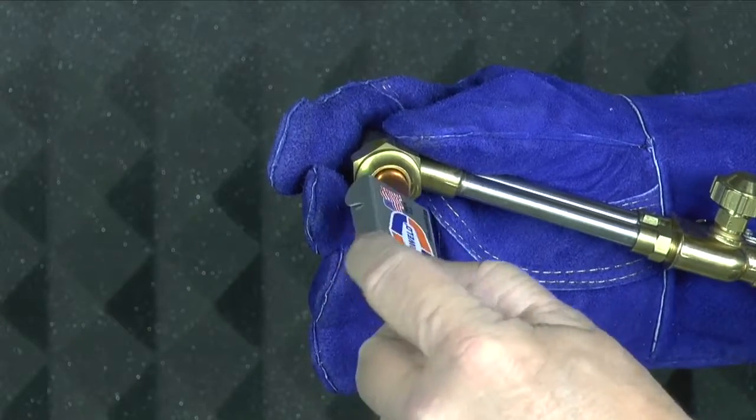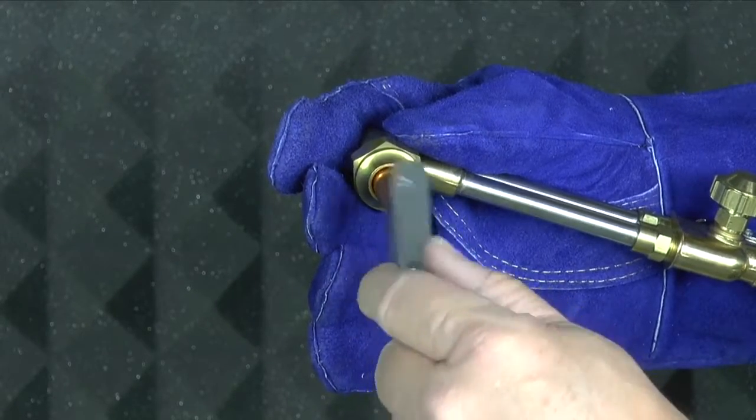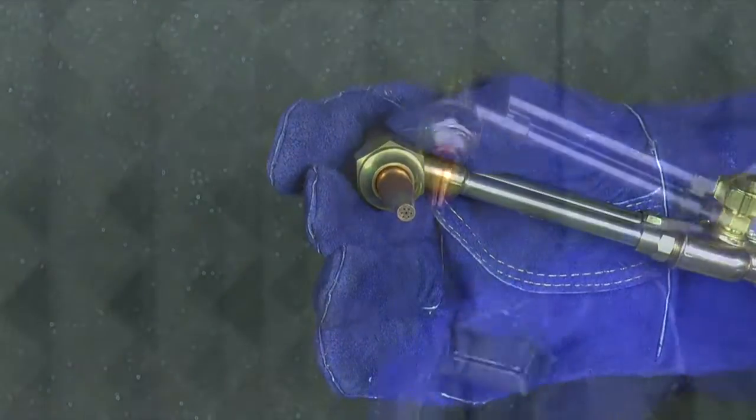If the wire becomes stuck in the tip, rotate the tip saver either clockwise or counter-clockwise while trying to remove the wire.